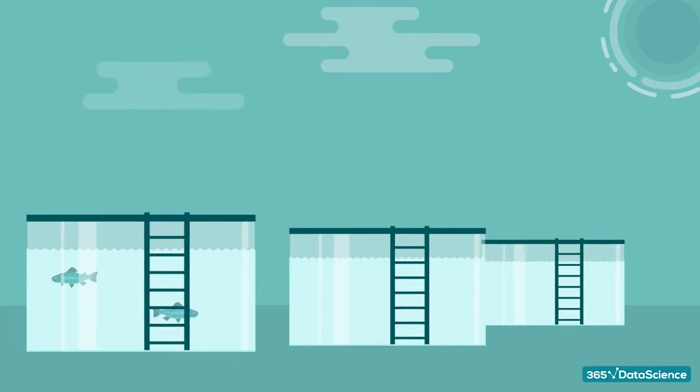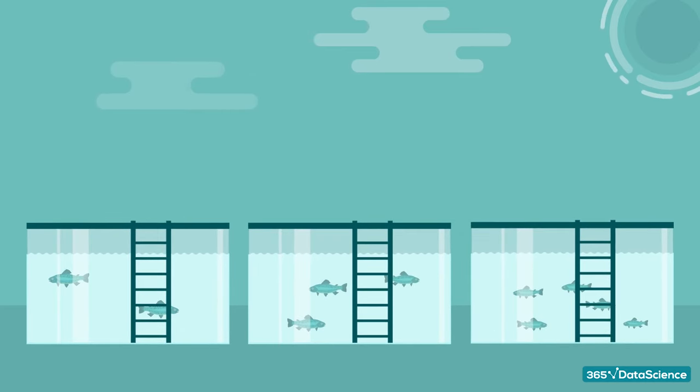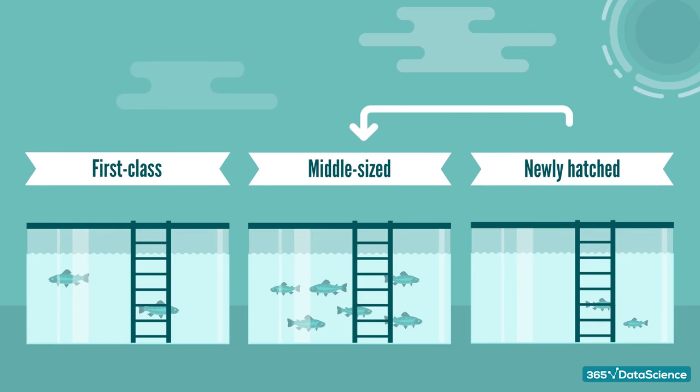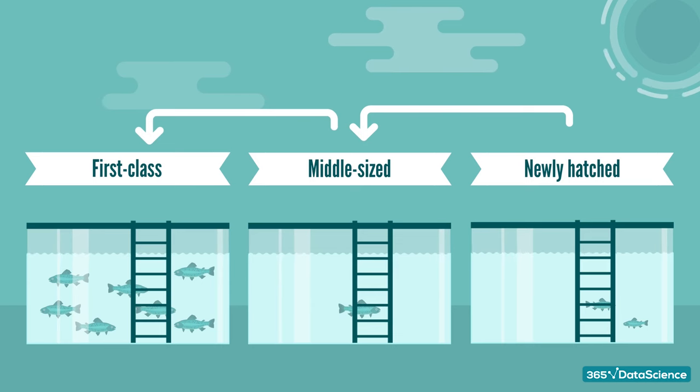Here's how it works. First, you have to label the reservoir depending on the approximate size of the fish in it. The labels are three – newly hatched, middle-size, and first-class. As the fish grow, you move them from newly hatched to middle-size and from middle-size to first-class, and once they're fully grown, you sell them. Meanwhile, you've stocked the pool with newly hatched trout and the process goes on.